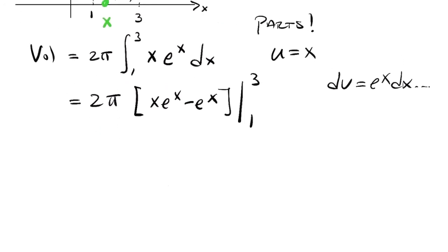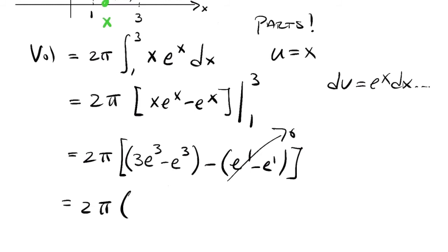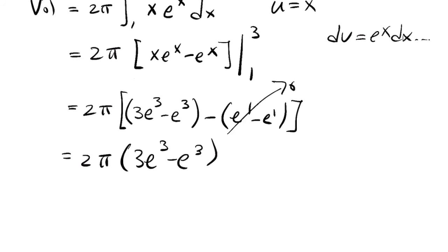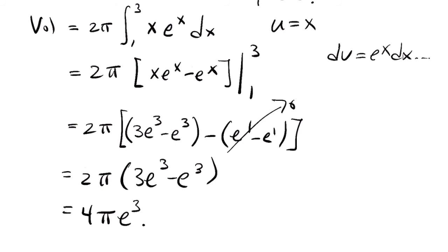So I have to evaluate that from 1 to 3. I'll write it as far as plugging in, but I'm not going to worry about simplifying it. That's what I get when I plug in 3, and then I need to carefully plug in 1. Plugging in 1 certainly gives me 0 over there. So it's 2 pi times the quantity 3 e cubed minus e cubed, and I should have noticed that that's 2 e cubed. So that's 4 pi e cubed. It's a nice answer.